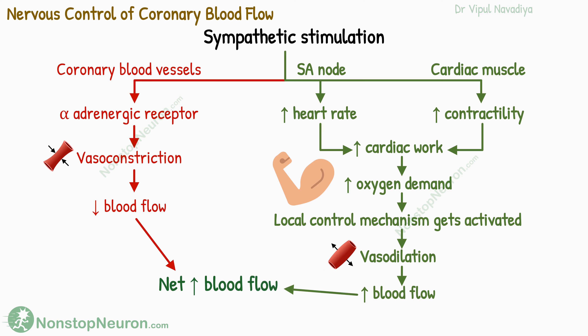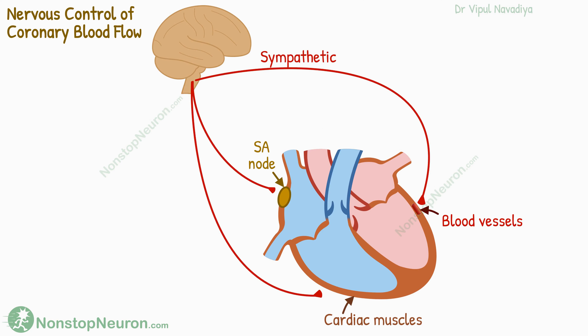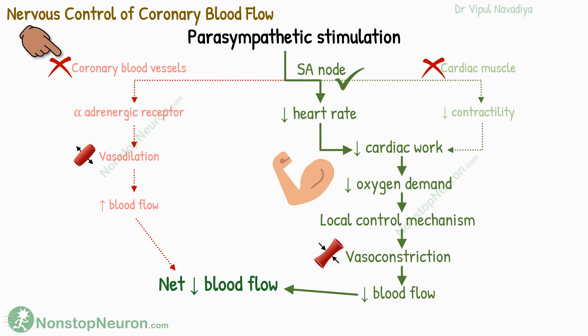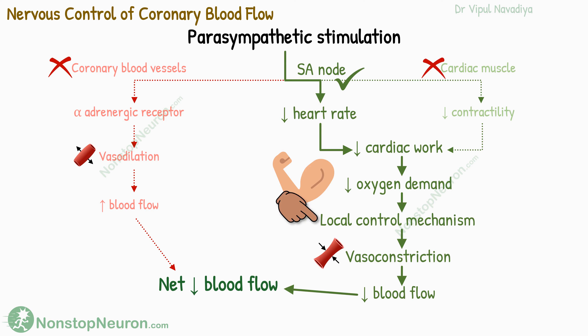Thus, normally sympathetic stimulation of the heart increases the coronary blood flow. Coming to parasympathetic stimulation, the vagus nerve mainly innervates the SA node only. The parasympathetic innervation to coronary blood vessels in the musculature is very scarce, so its direct action on blood vessels is minimal. But at the SA node, vagal stimulation causes a decrease in heart rate, which decreases oxygen demand. So due to the indirect local effects, the blood flow decreases.